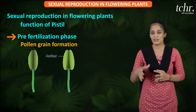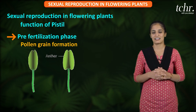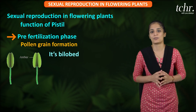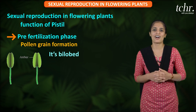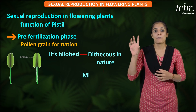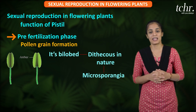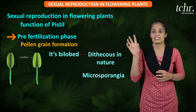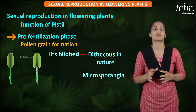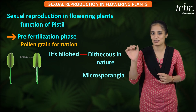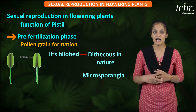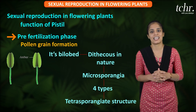Inside the anther, the structure is bilobed — each lobe is called a theca — so it is dithecous in nature. Inside each lobe, you have microsporangia. These are the sacs that initiate development and produce the pollen grains — microspores are pollen grains. There are four microsporangia, which is why the anther is called a tetrasporangiate structure.